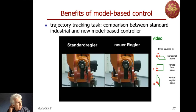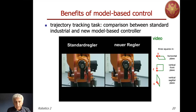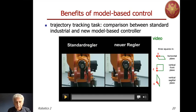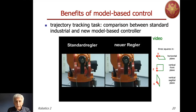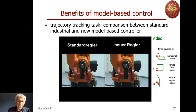You will see the difference between the two behaviors. On the left hand side is the conventional controller used at that time. So this is the first square, second square, and the third square. You can see the difference in vibration that you have in the standard regulator with respect to the model-based controller.